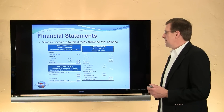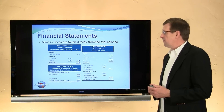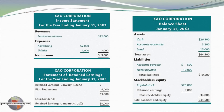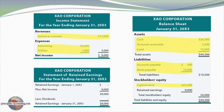Those financial statements — here's an example for this particular company — would consist of the income statement, the statement of retained earnings, and the balance sheet. The amounts that are highlighted are the amounts that were found in the trial balance for the company. The revenues and expenses are listed on the income statement, and the assets, liabilities, and capital stock account are listed on the balance sheet.